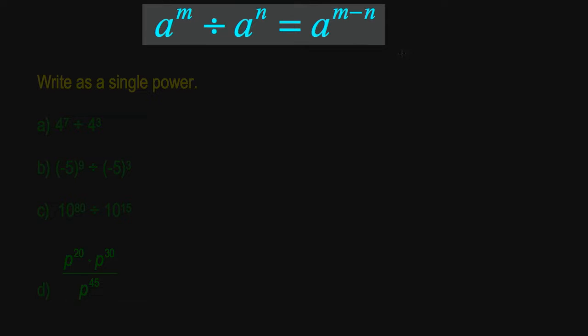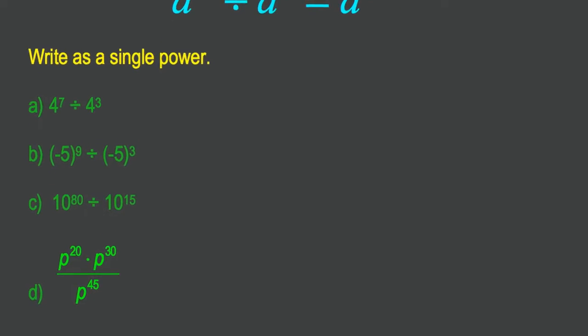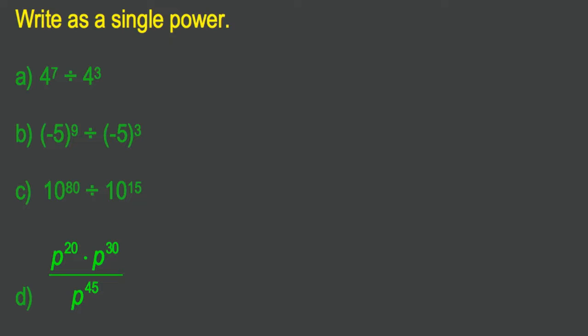Let's restate that law: when dividing two powers with the same base, keep the base the same, subtract the exponents. Here we go. Looking at 4 to the exponent 7 divided by 4 to the exponent 3. Well, they have the same base. I'll keep that base the same and I'll subtract the exponents. 7 subtract 3 is 4. 4 to the exponent 4.